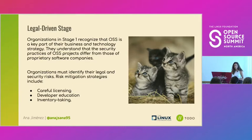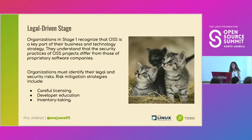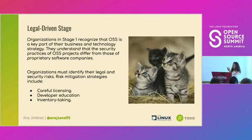In the legal-driven stage, organizations already recognize that open source software is a key part of their business and technology strategy. The tasks that typically follow include identifying all legal and security risks, finding ways to implement risk mitigation strategies — for instance, inventory taking, developer education on legal concepts, and careful licensing.